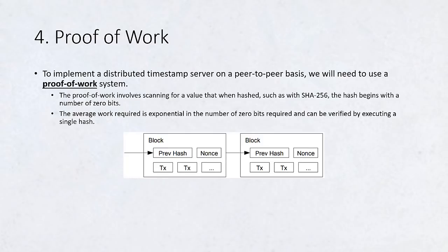Proof-of-Work. To implement a distributed timestamp server on a peer-to-peer basis, we will need to use a proof-of-work system, similar to Adam Back's HashCash, rather than newspaper or Usenet posts. The proof-of-work involves scanning for a value that when hashed, such as with SHA-256, the hash begins with a number of zero bits. The average work required is exponential in the number of zero bits required, and can be verified by executing a single hash.